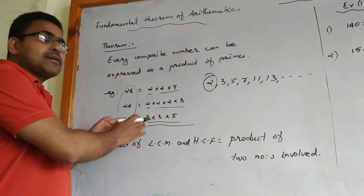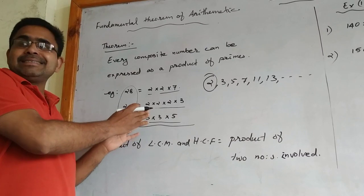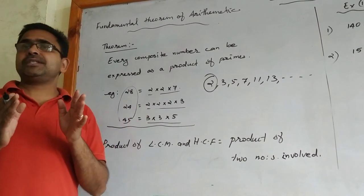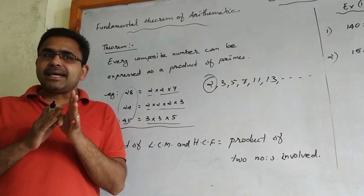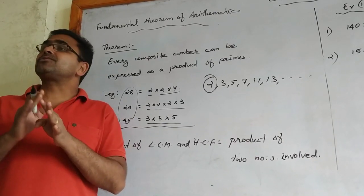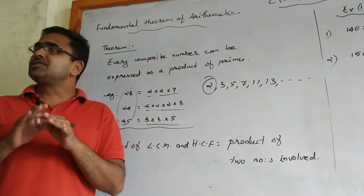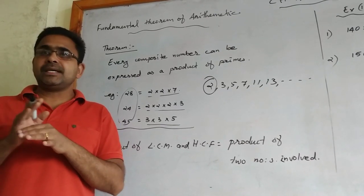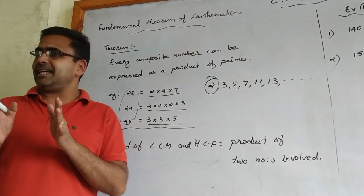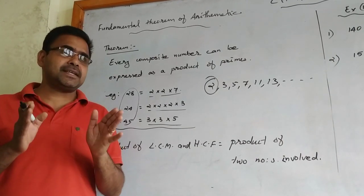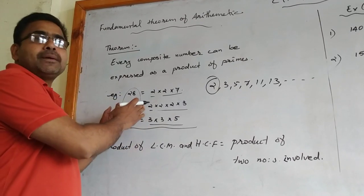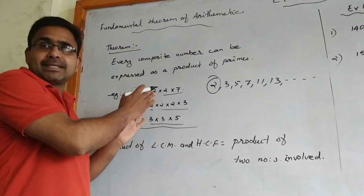We are factorizing with prime numbers for 2 purposes: to calculate the LCM — Least Common Multiple — as well as to calculate the HCF — Highest Common Factor, or GCD. We calculate these by using the method of prime factorization.